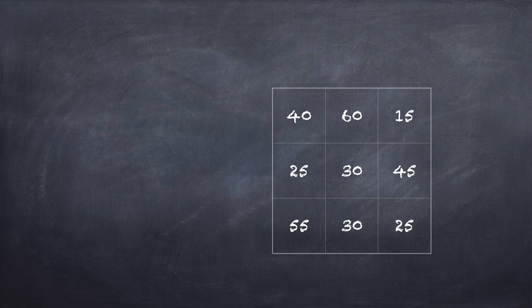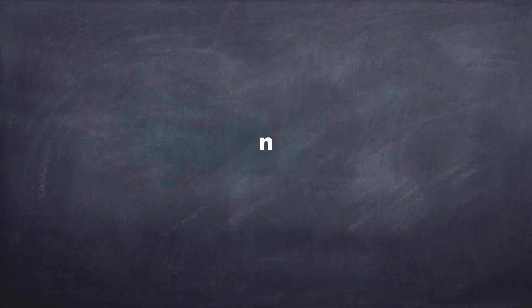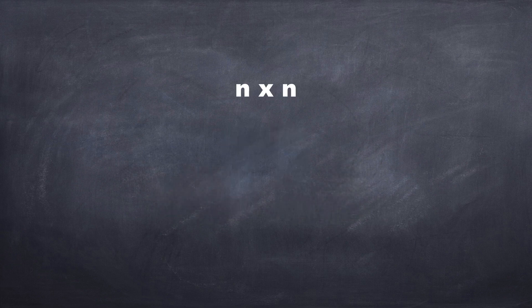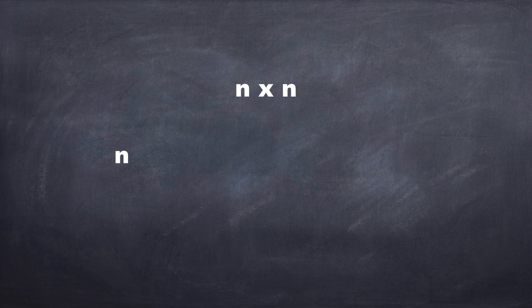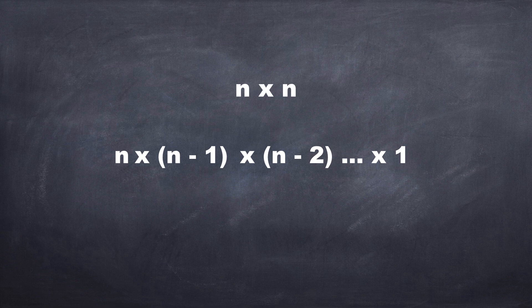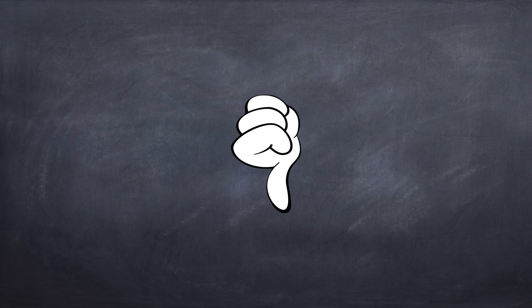However, this is a problem where n equals three. For small n this method may suffice, but for larger n, say 100, it does not. In general, for an n by n matrix we have n assignments to choose from in the first column, then n minus one in the second column since we cannot choose the same assignment chosen in the first column, then n minus two in the third column, and so on until we've reached one. This is n factorial, giving us a time complexity of big O of n factorial. This is not good.